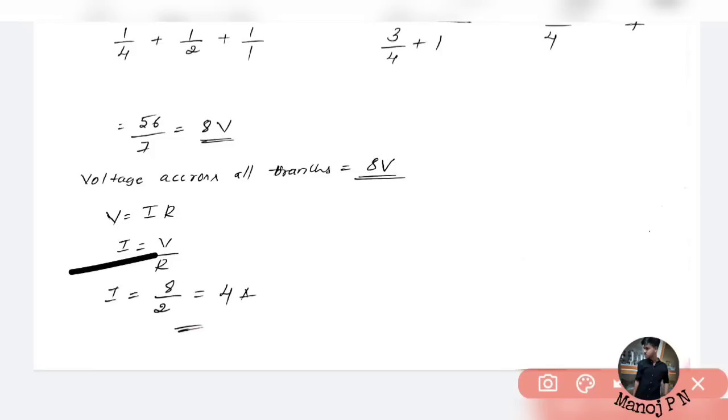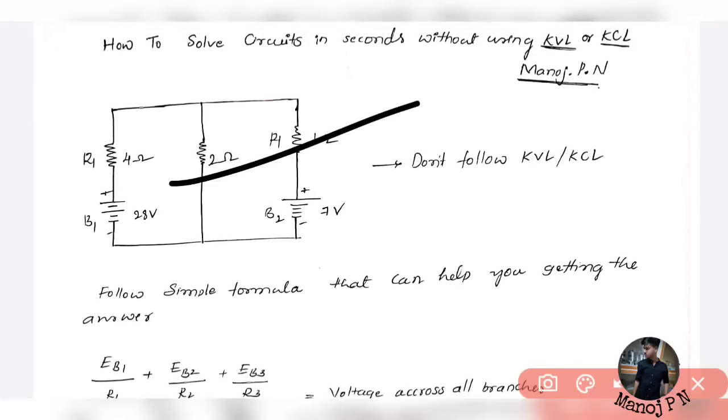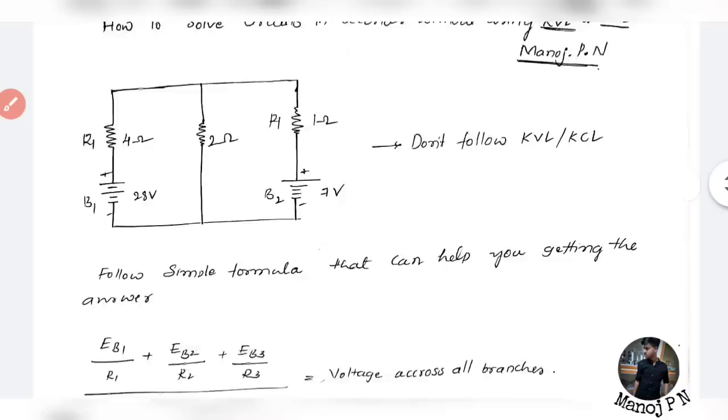So you will find the current using V equals IR formula. V is equal to IR. What is V? 8. What is R? 2. So 8 divided by 2. This region is in this region because I can calculate it. So it's that simple. I hope this video makes sense and will help you.